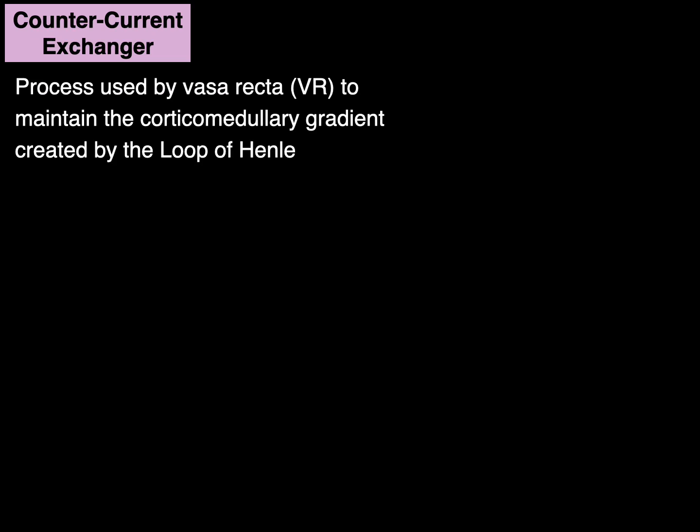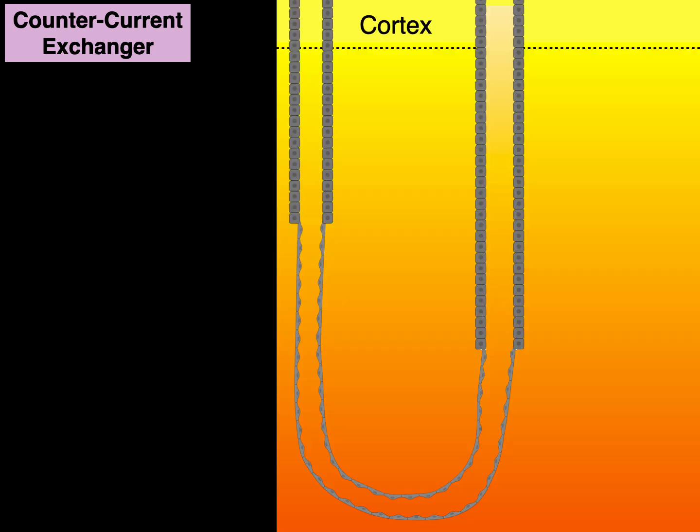The countercurrent exchanger is the process used by vasa recta to maintain the corticomedullary gradient created by those loops of Henle of the juxtamedullary nephrons. Let's do this again with pictures. In this illustration, there above the dashed line is the renal cortex and below is the renal medulla.